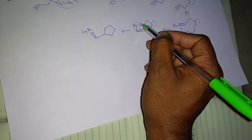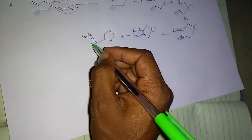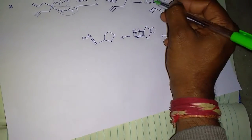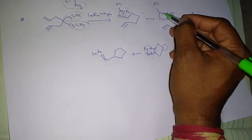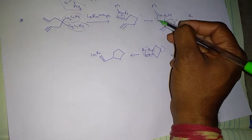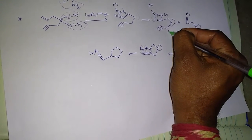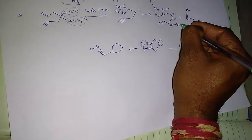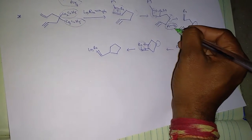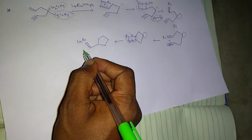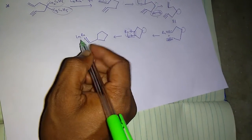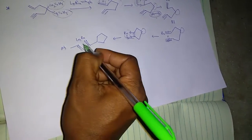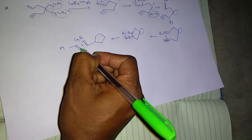Breaking of this ruthenium bond and formation of a double bond — the single bond breaks here. On further reacting, there is loss of the new alkene. The formation of a new alkene is lost here and it reacts with this one. Breaking of these bonds forms a new one.